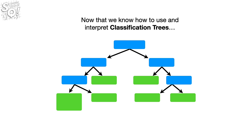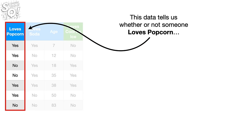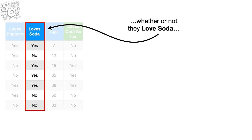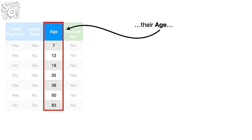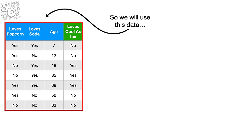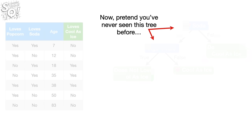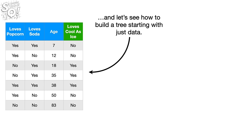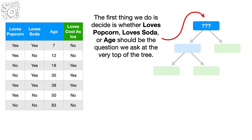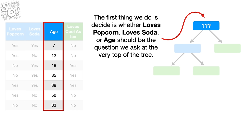Now that we know how to use and interpret classification trees, let's learn how to build one from raw data. This data tells us whether or not someone loves popcorn, whether or not they love soda, their age, and whether or not they love the 1991 blockbuster Cool as Ice starring Vanilla Ice. We will use this data to build a classification tree that predicts whether or not someone loves Cool as Ice. The first thing we do is decide whether loves popcorn, loves soda, or age should be the question at the very top of the tree.